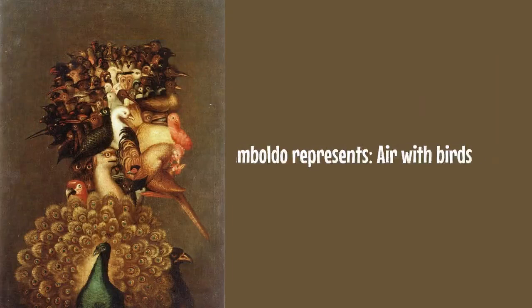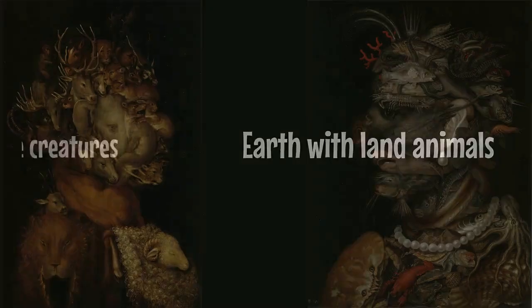In his other series of four paintings, The Four Elements, Arcimboldo represents air with birds, fire with burning wood and cannons, earth with land animals, and water with marine creatures.